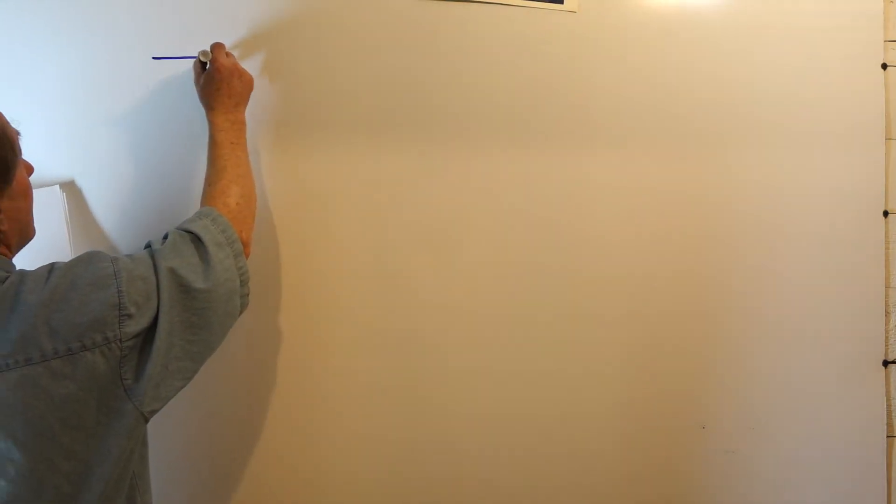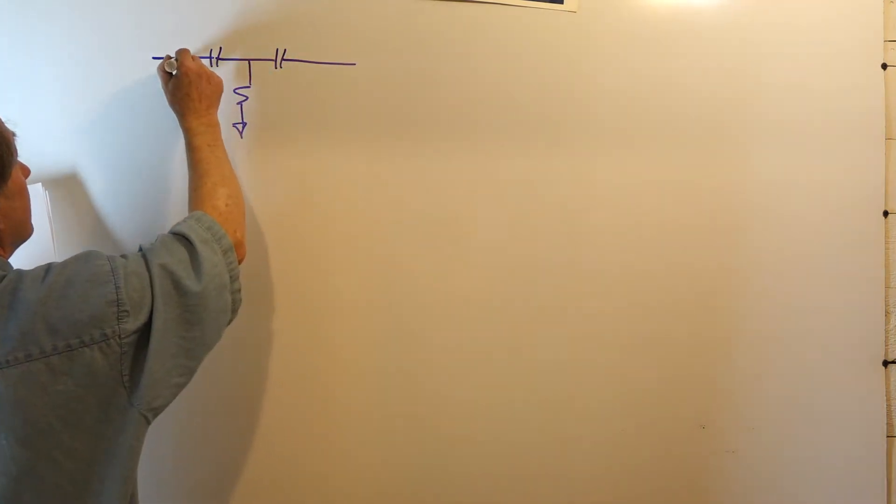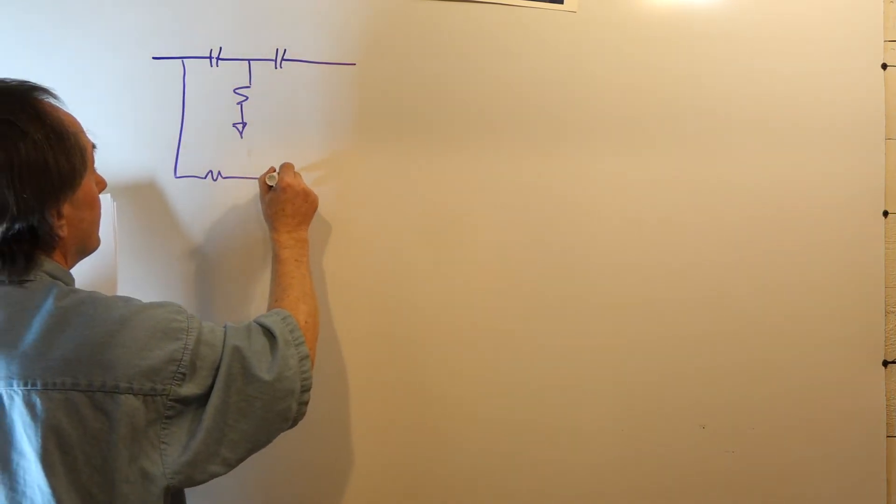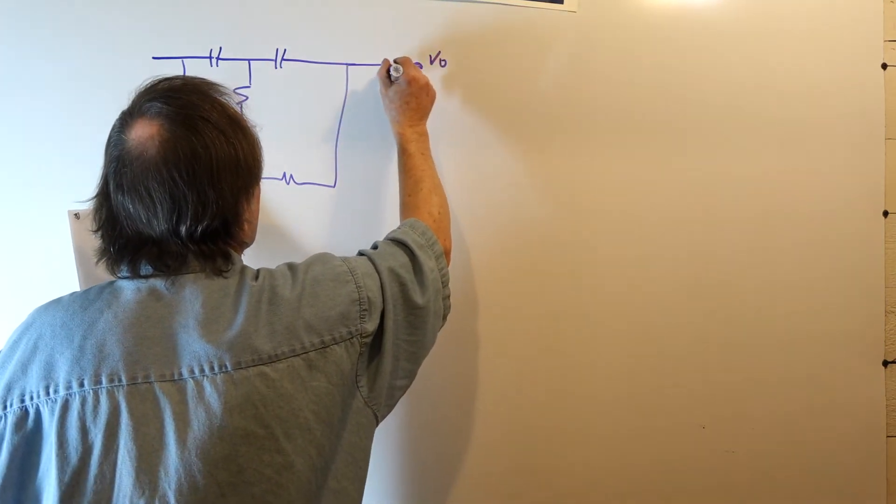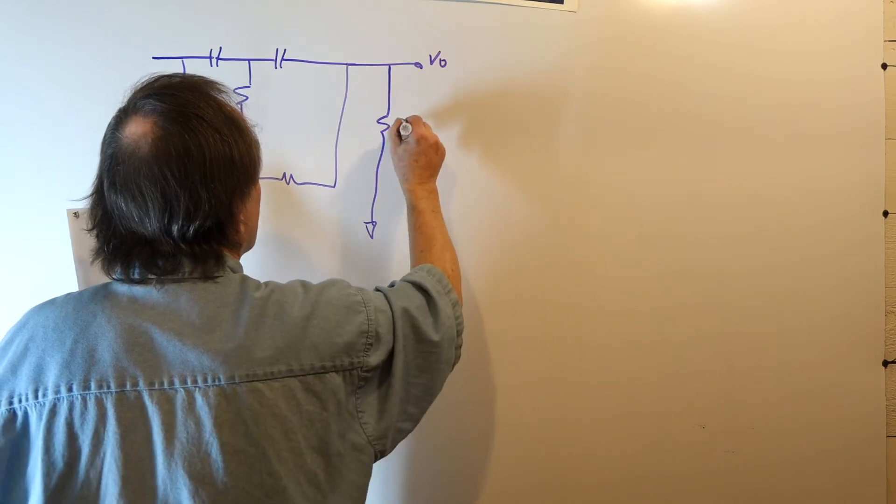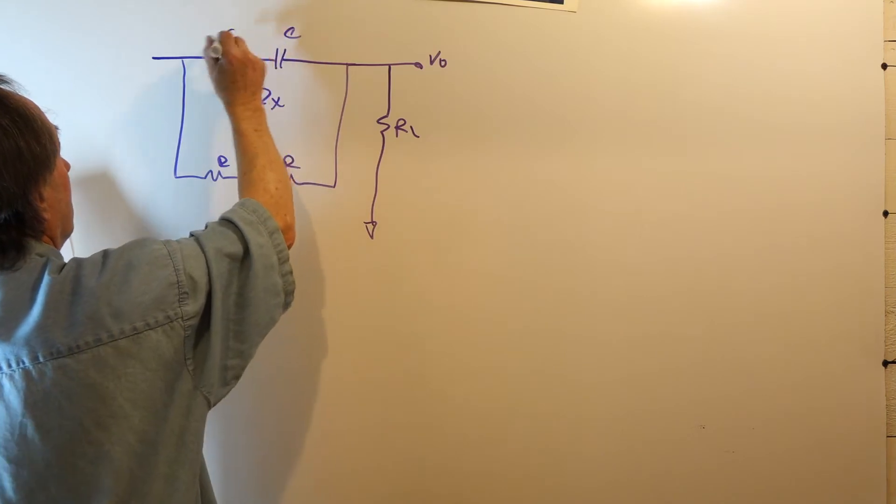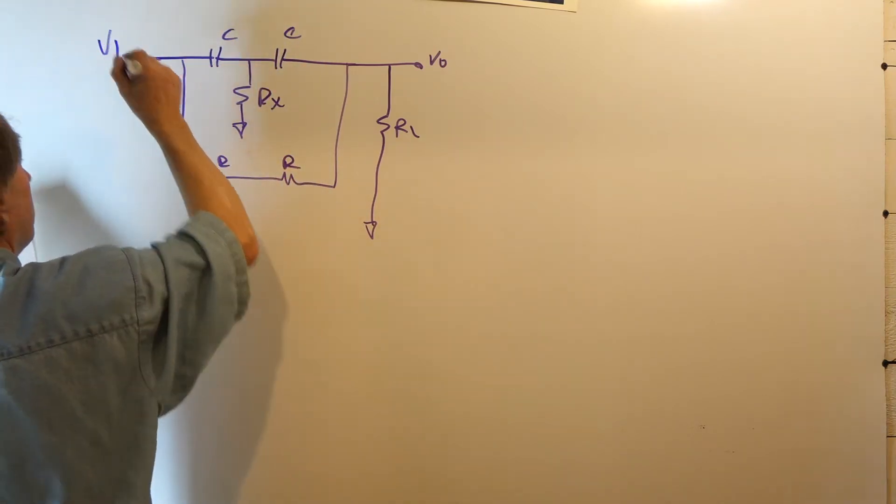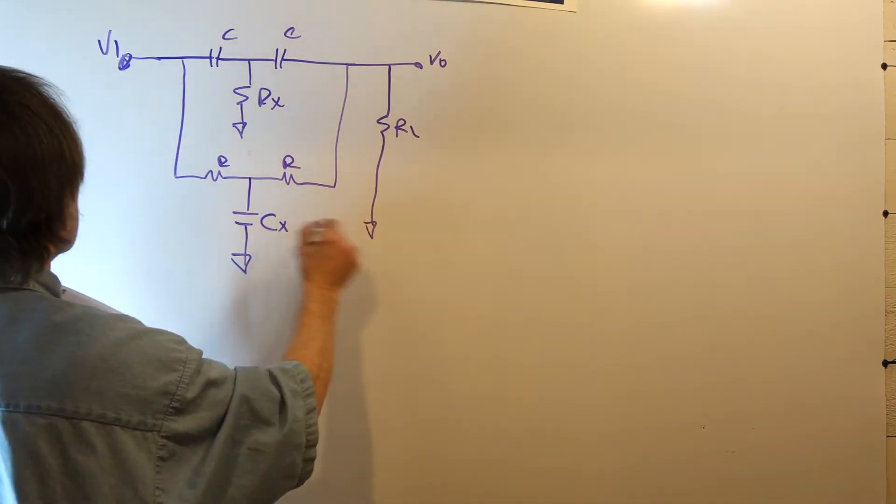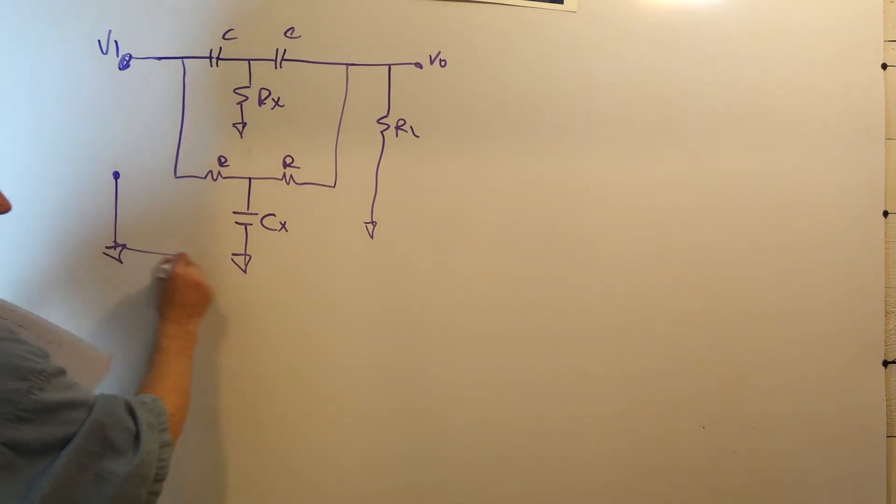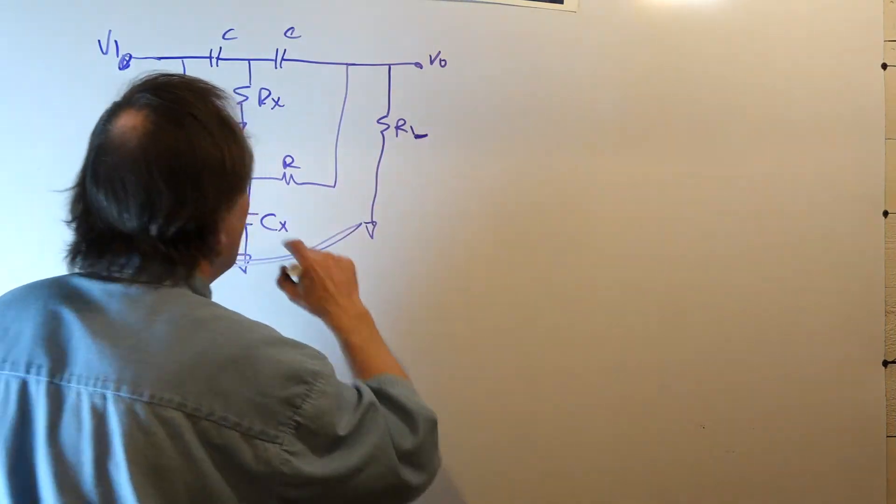So, here's our network. What this means is this is a common ground, common node on the network. So, here's our load RL.